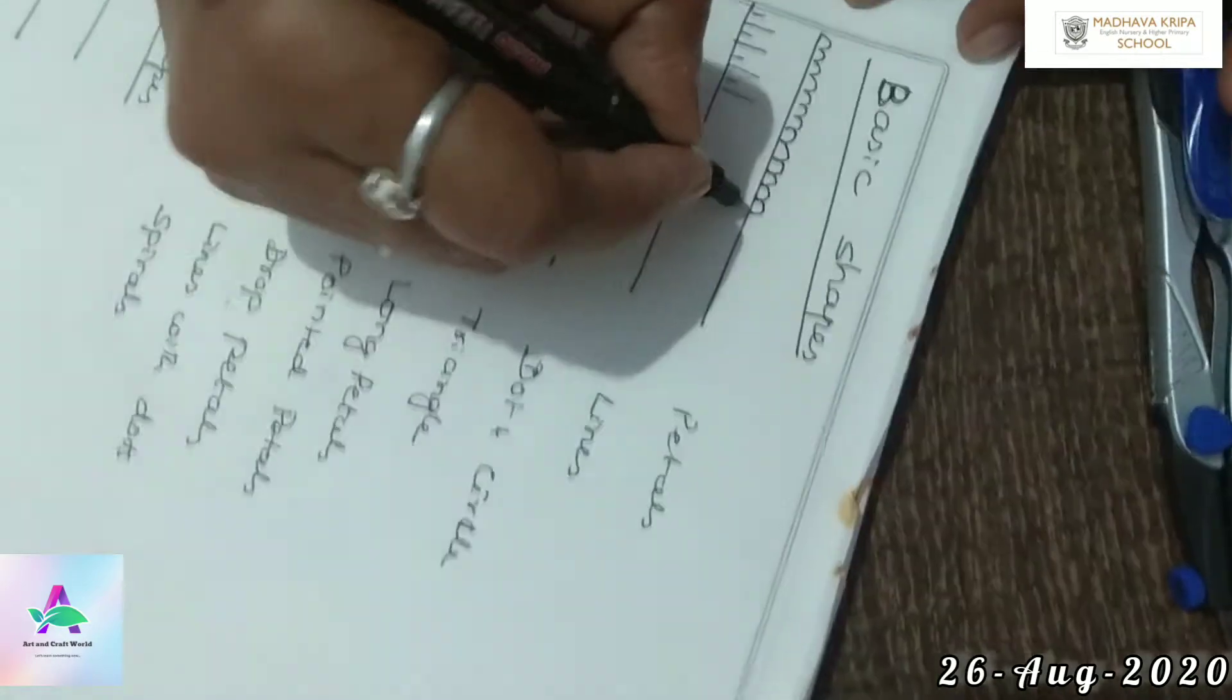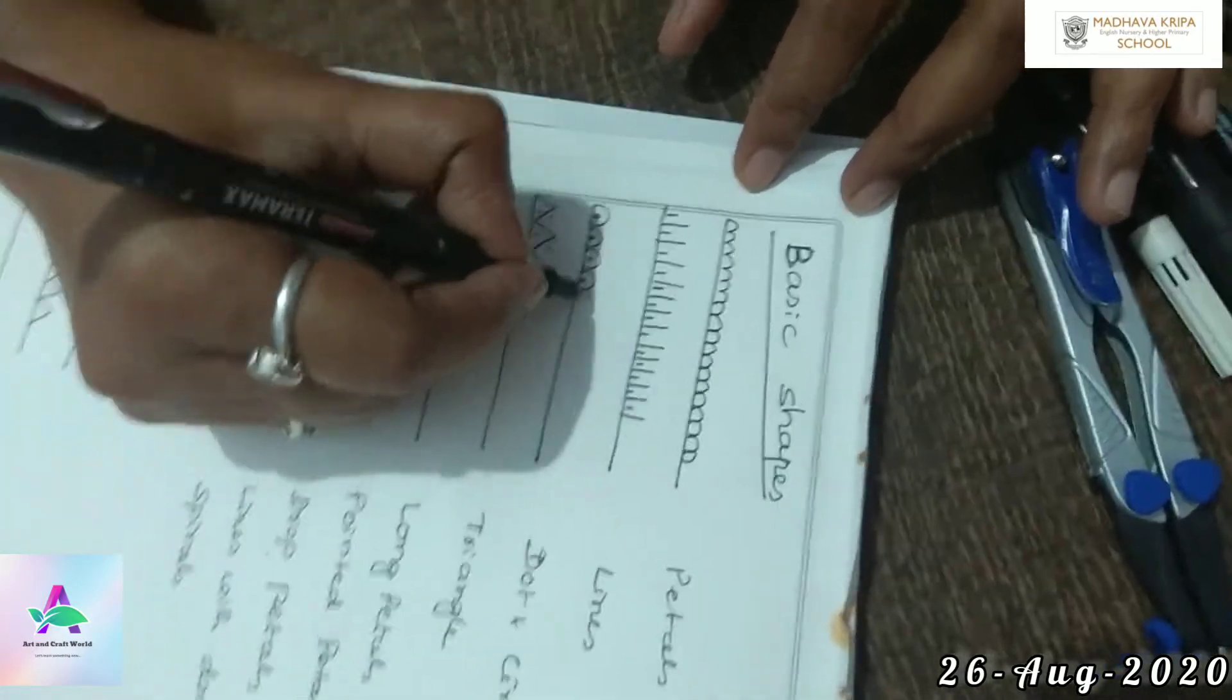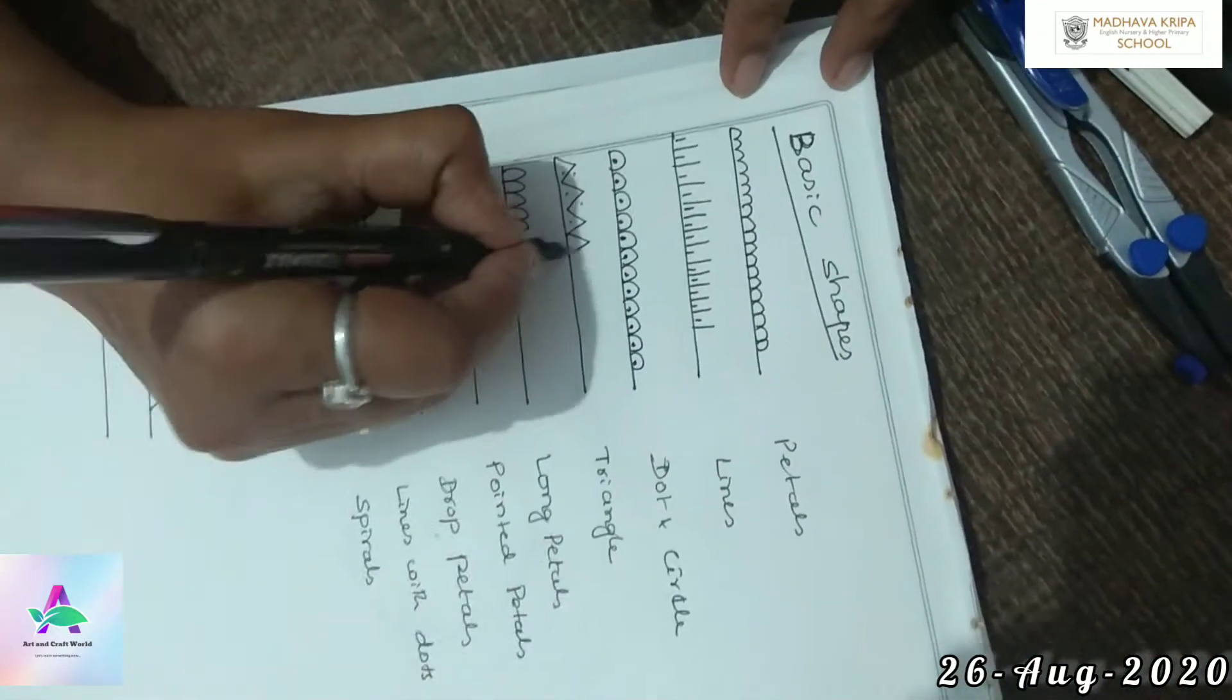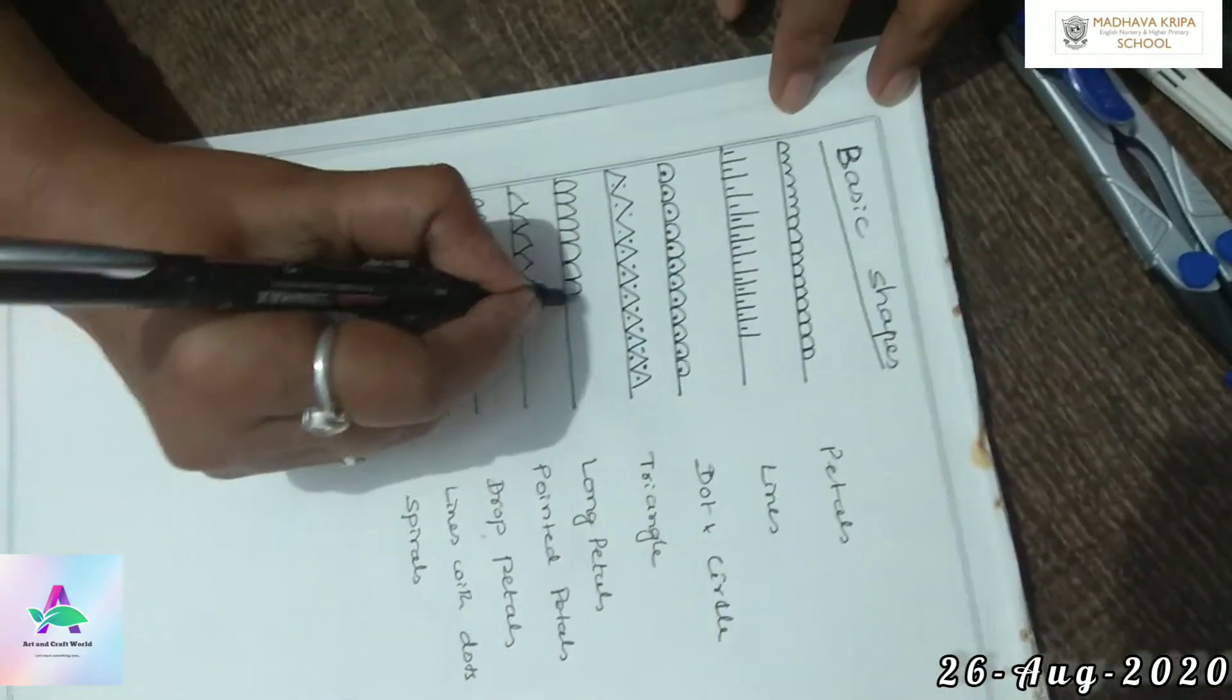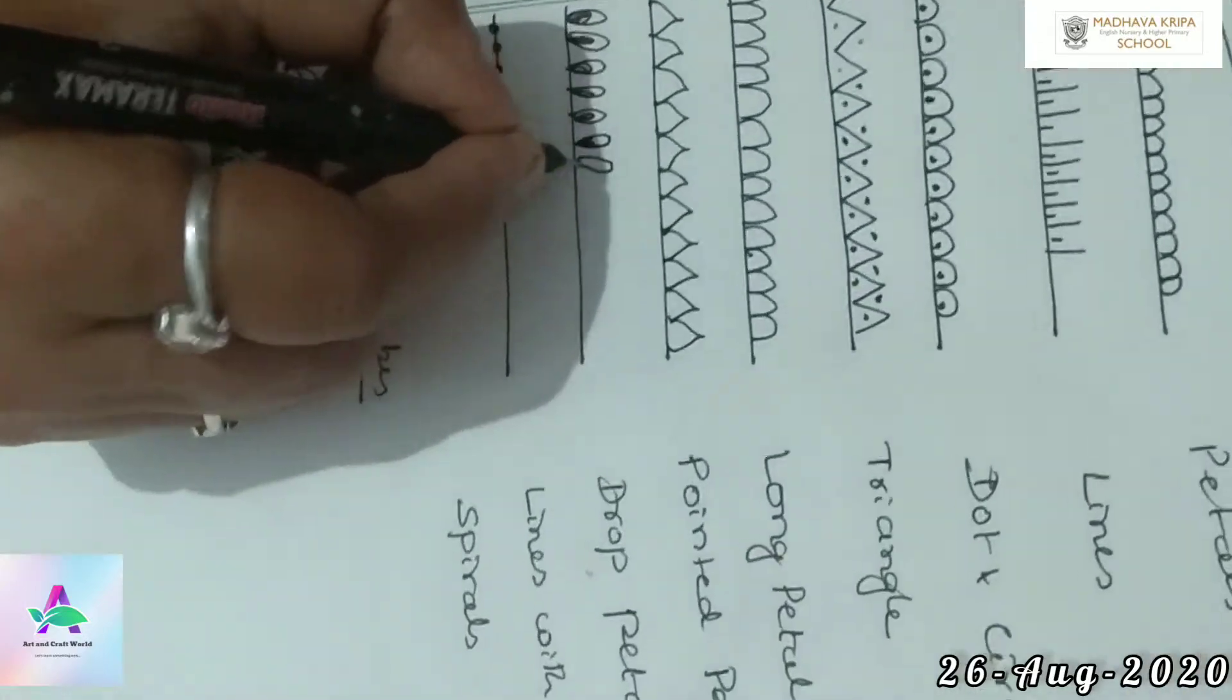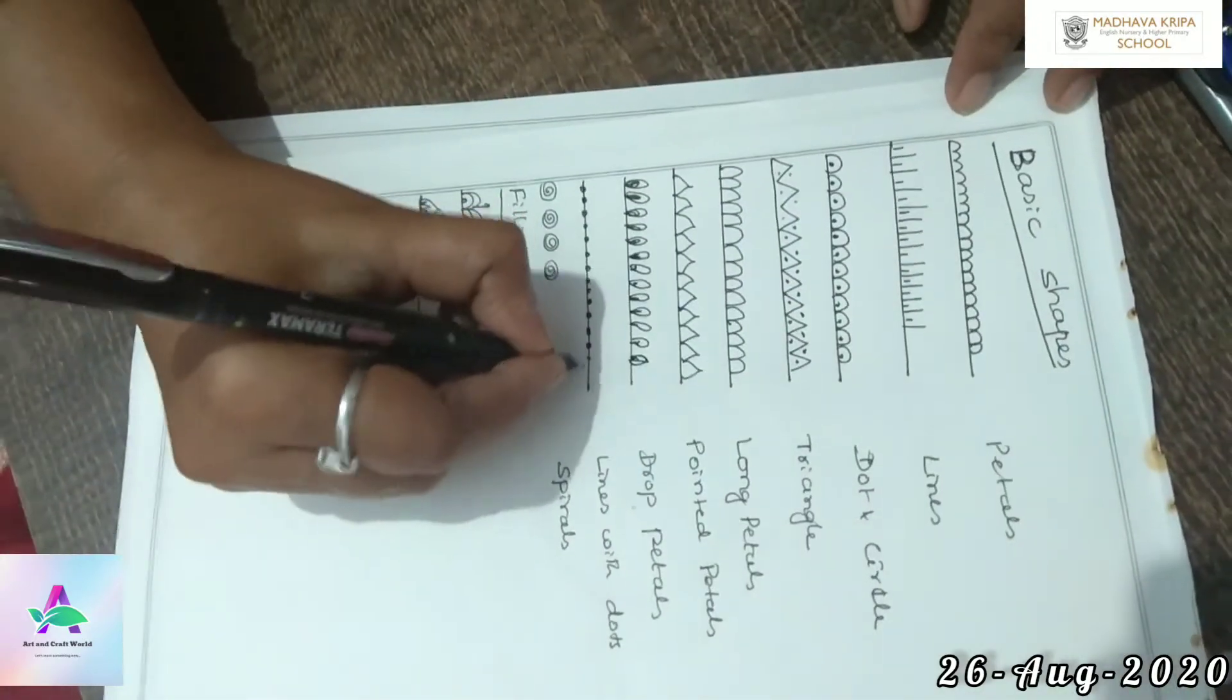See, this is petals. This is lines, short line and long lines. This is dot and circle. Triangles. Long petals. Pointed petals. Drop petals. Lines with dots and spirals.